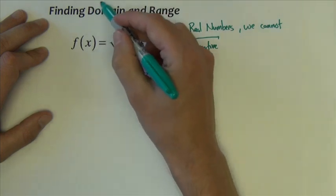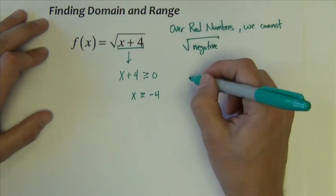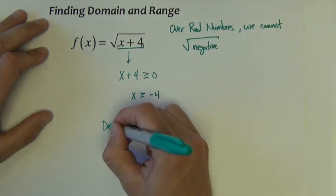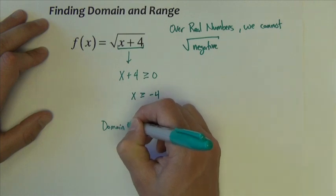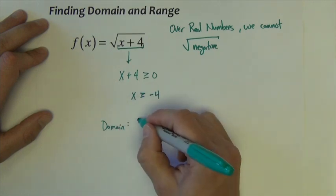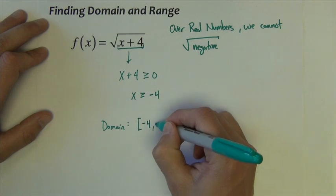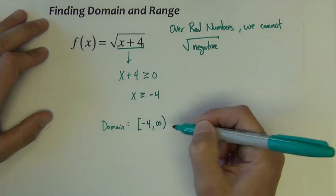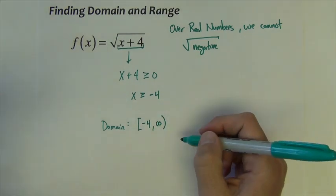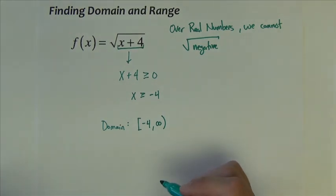X's are domain, so we've just essentially found the domain. The domain for this function are all x's greater than or equal to negative four, or preferably negative four to infinity. In other words, x cannot be anything smaller than negative four.